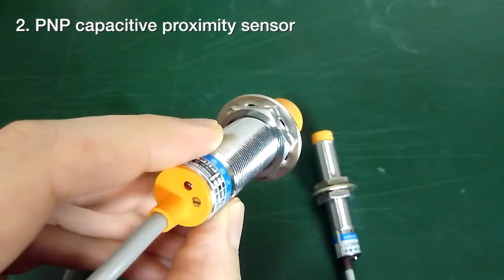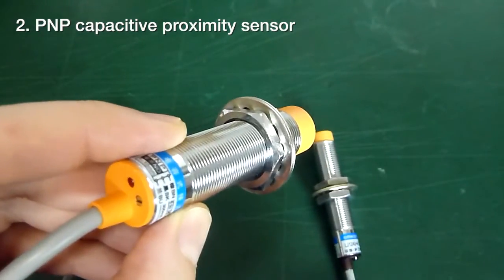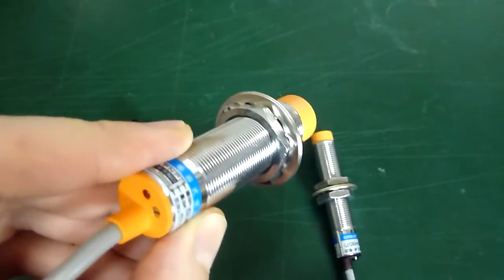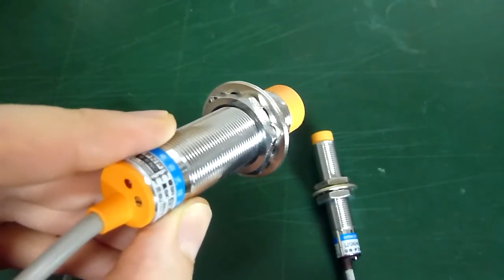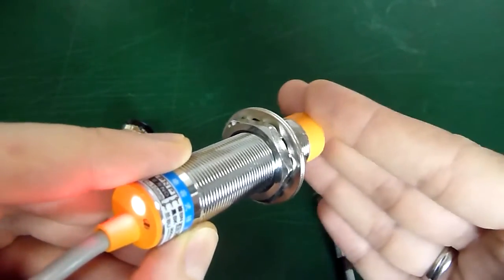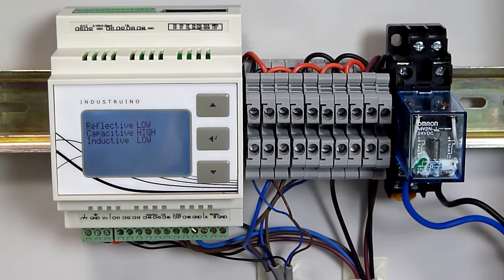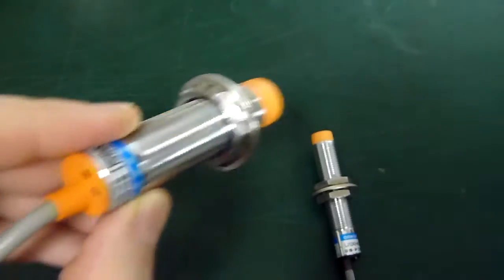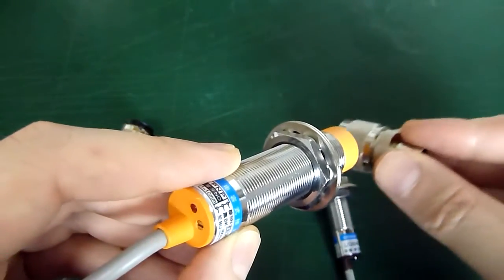The second sensor is a capacitive sensor and will be triggered by any material which is conductive or has a dielectric different from air. So the body is one of them, or even some metals.